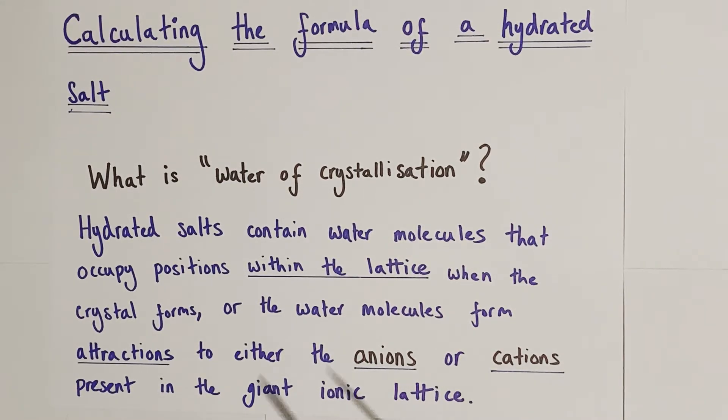Or it's possible the water molecules can actually form electrostatic attractions with either the anions or cations, positive and negative ions, that make up the giant ionic lattice. Either way we assume that the water molecules are intrinsically part of the giant lattice ionic structure.